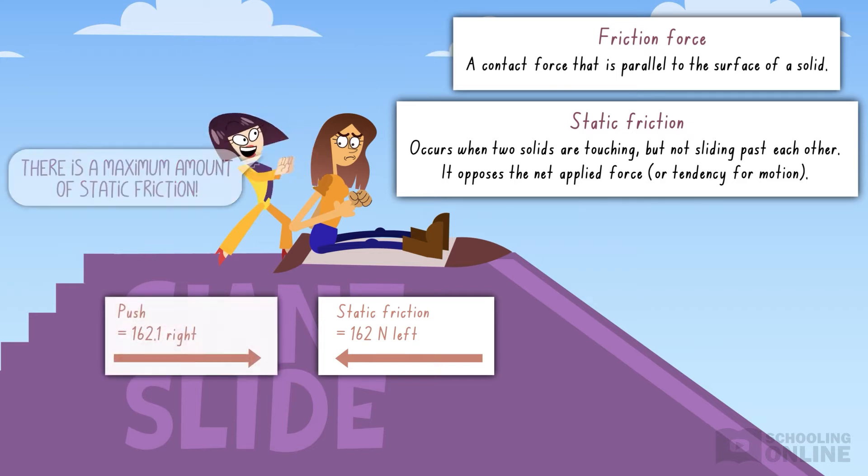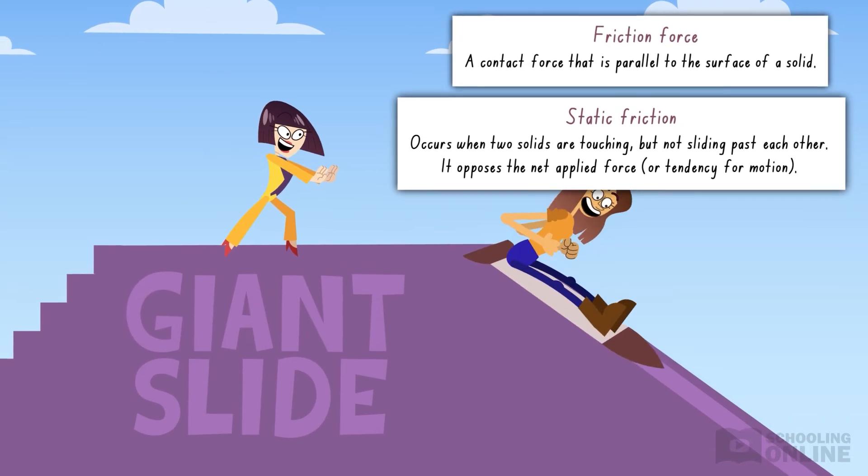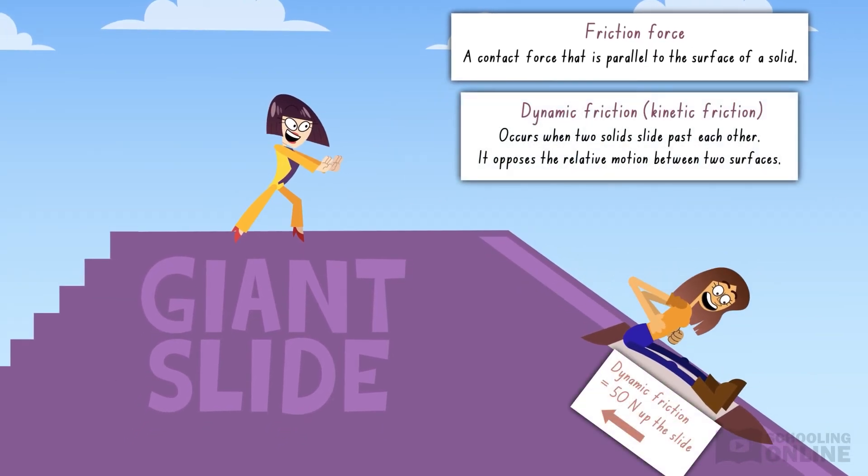If Lotus pushes a little harder than this value, she will overcome static friction. And when Brooke starts moving, dynamic friction kicks in.